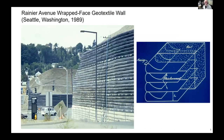Here is a slide of what is a very famous wall in the literature, tracing the behavior of this technology. This is a very high wrapped-face wall that was built in Seattle. In this variation on the theme, you can see horizontal layers of reinforcement placed into soil — buried and then wrapped around the face and tucked back in to provide the facing. Here the reinforcement provides the reinforcing function for the soil, but it also maintains the stability and integrity of the facing.